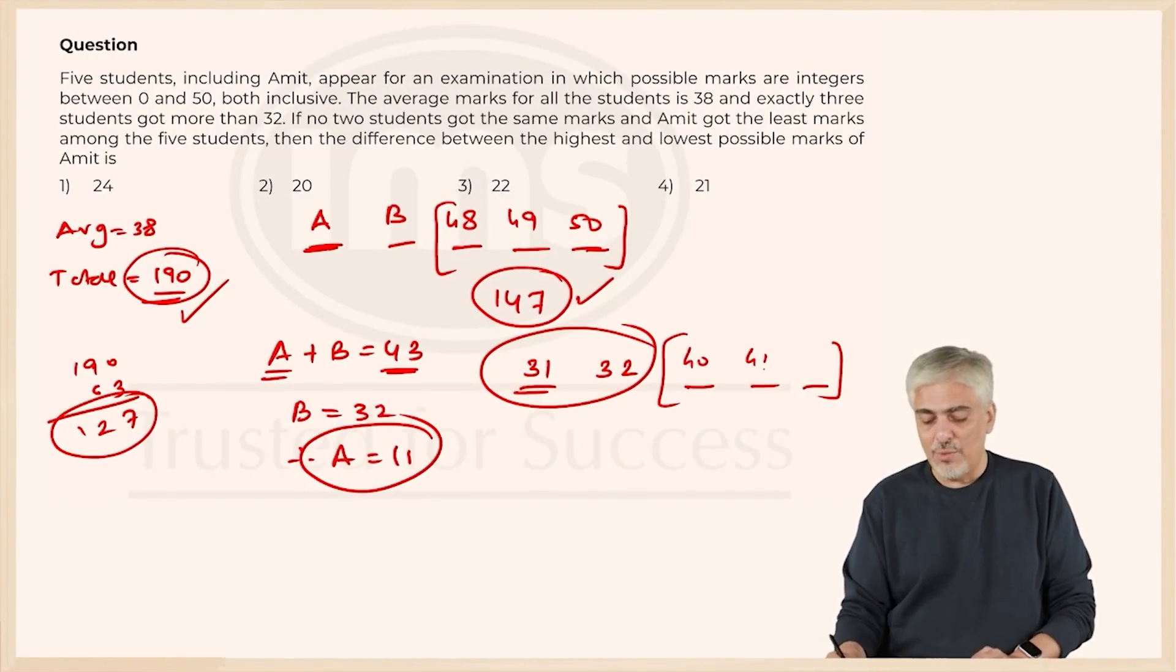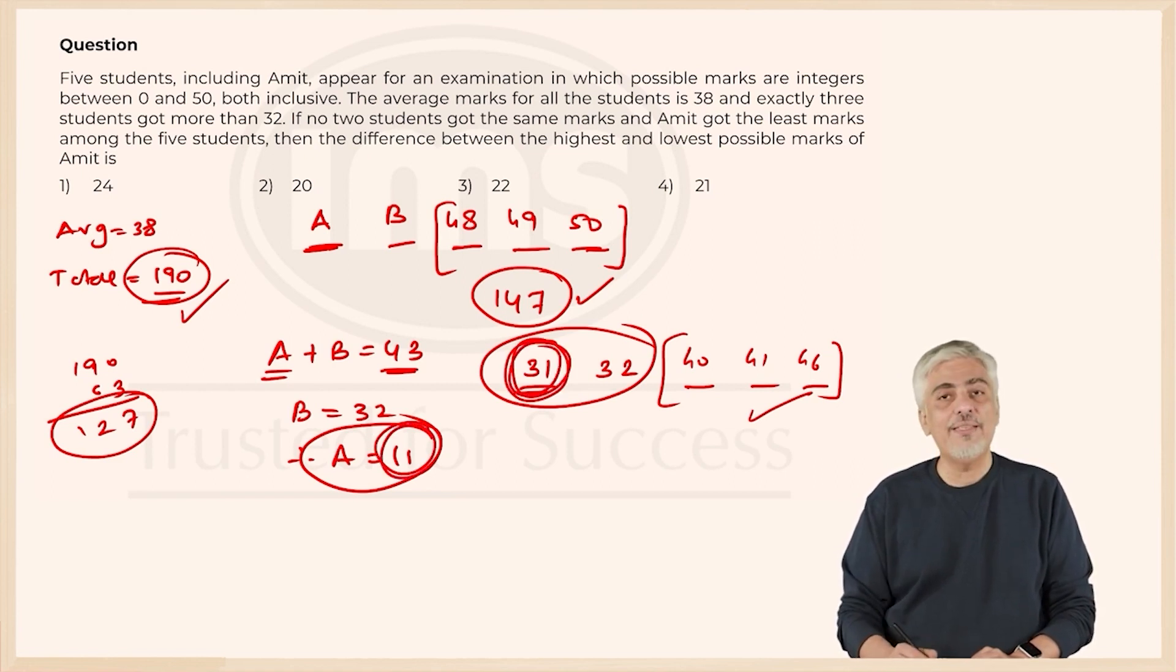127. There could be so many other possibilities, it doesn't have to be this possibility but it is possible. So the highest value A can take is 31, the lowest value A can take is 11, difference between that will be 20.